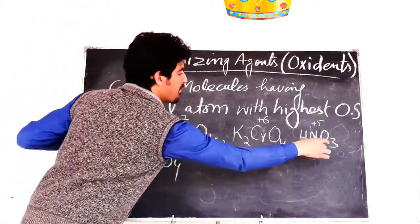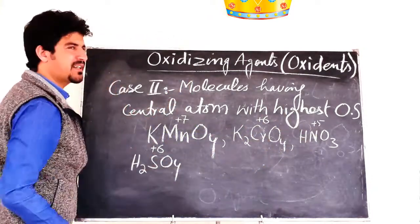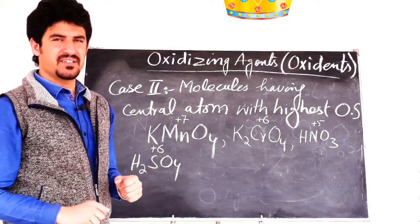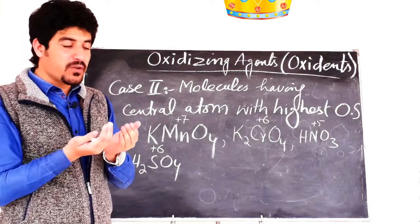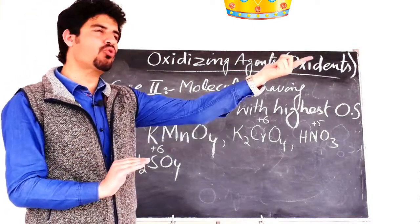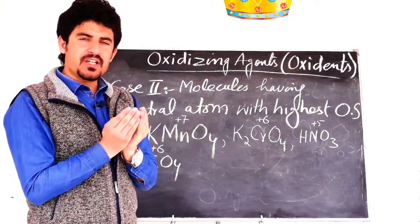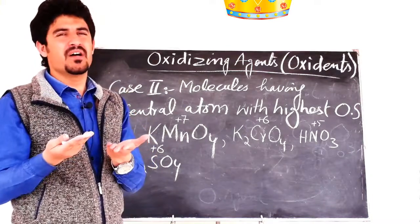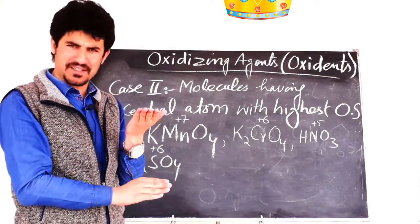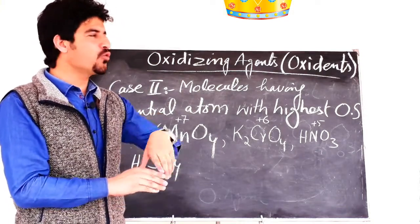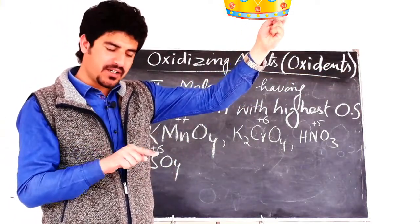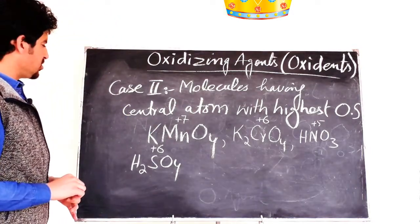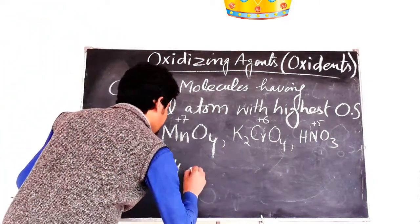Remember that all compounds and molecules whose central atoms are at the maximum, highest oxidation state are oxidizing agents. Why? Because they can only reduce — they cannot be oxidized further since they are already at the highest oxidation state. So they reduce themselves and oxidize others, and that is why such species are called oxidizing agents.